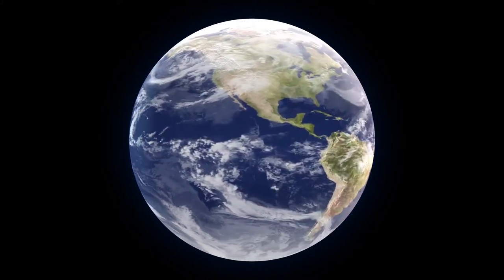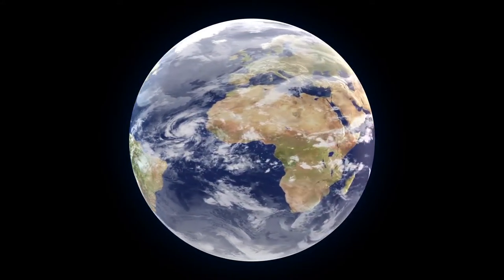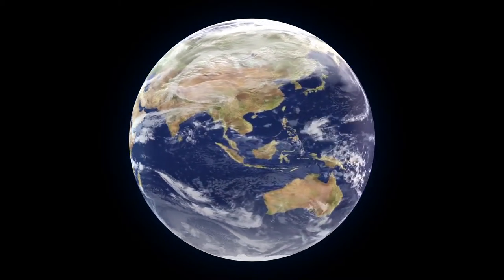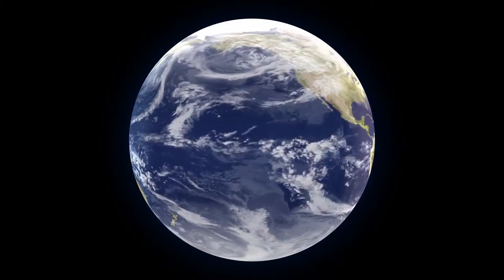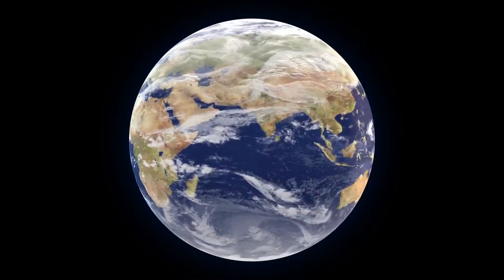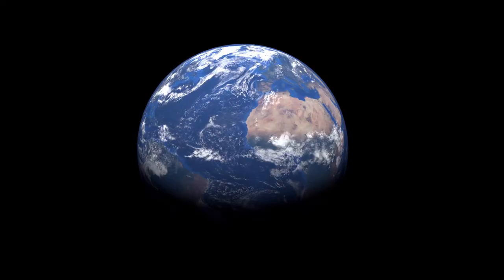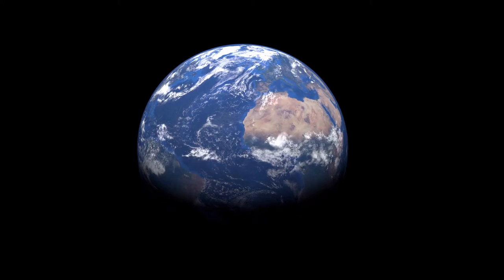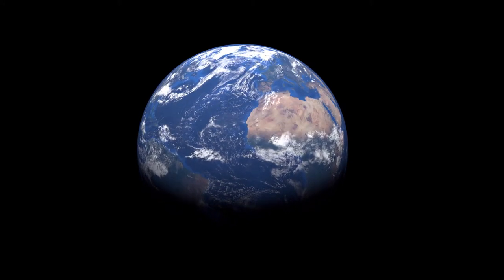Estimates of the number of species on Earth today vary widely; most species have not been described. Over 7.6 billion humans live on Earth and depend on its biosphere and natural resources for their survival. Humans have developed diverse societies and cultures. Politically, the world has about 200 sovereign states.